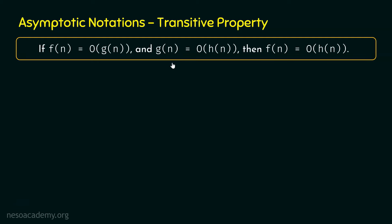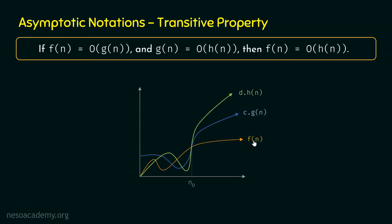Let's try to visualize this property through a graph. Here is the graphical representation of F(n), G(n), and H(n). We can observe that F(n) is Big O of G(n), or we can say G(n) is asymptotically bigger than F(n). Similarly, H(n) is asymptotically bigger than G(n). From this graph, we can also observe that H(n) is asymptotically bigger than F(n). This is the transitive property.